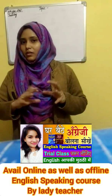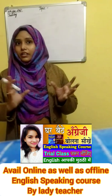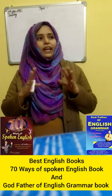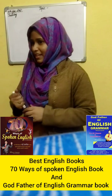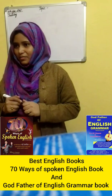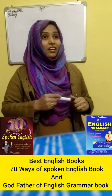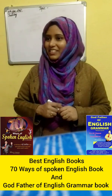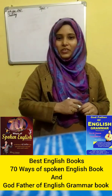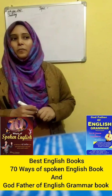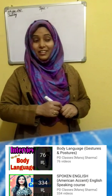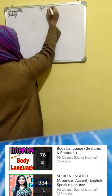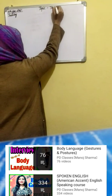We are all familiar with the different shapes of these items. Can anybody tell me what is the shape of the set square? Very good, Reena — it is a triangular shape! So our today's topic is triangle.